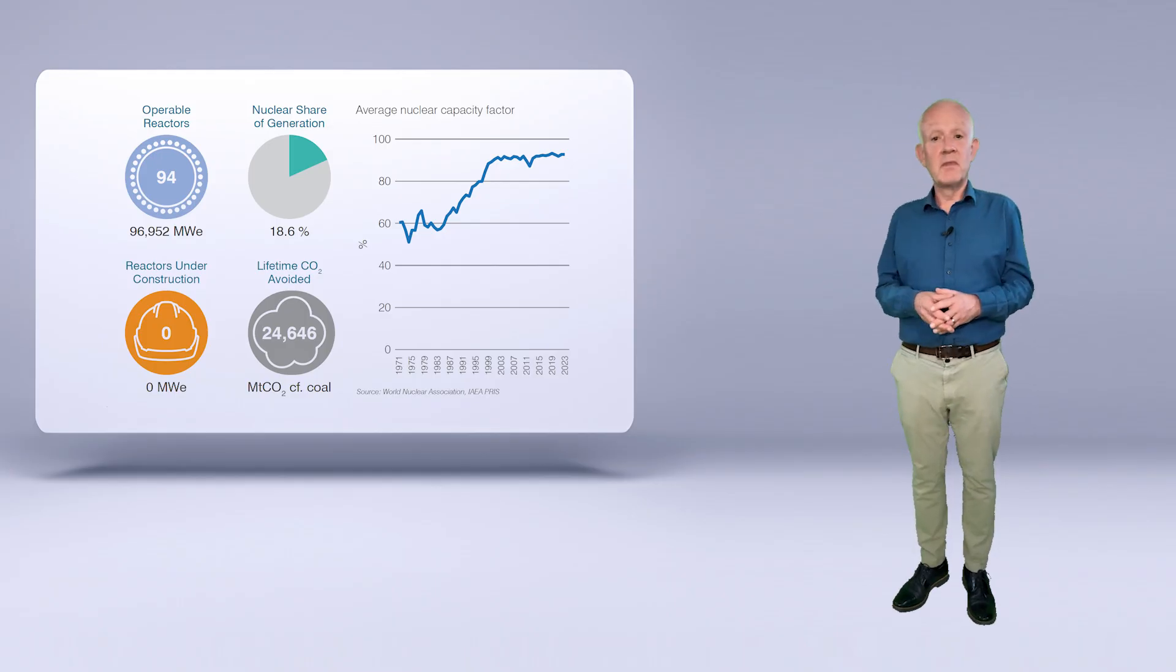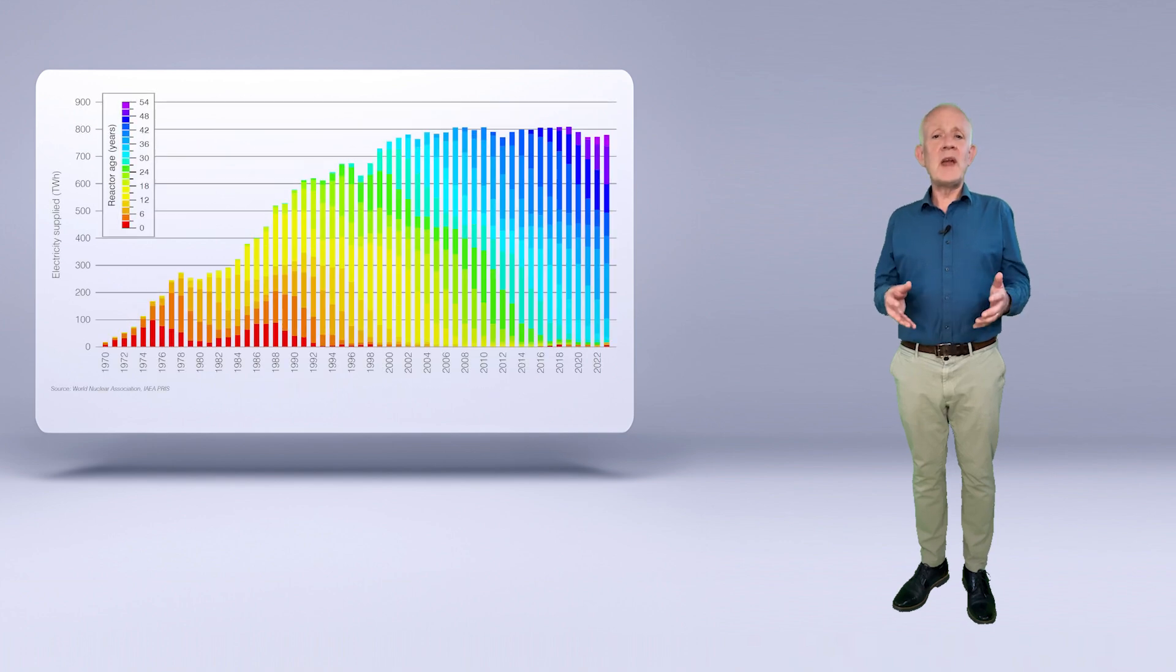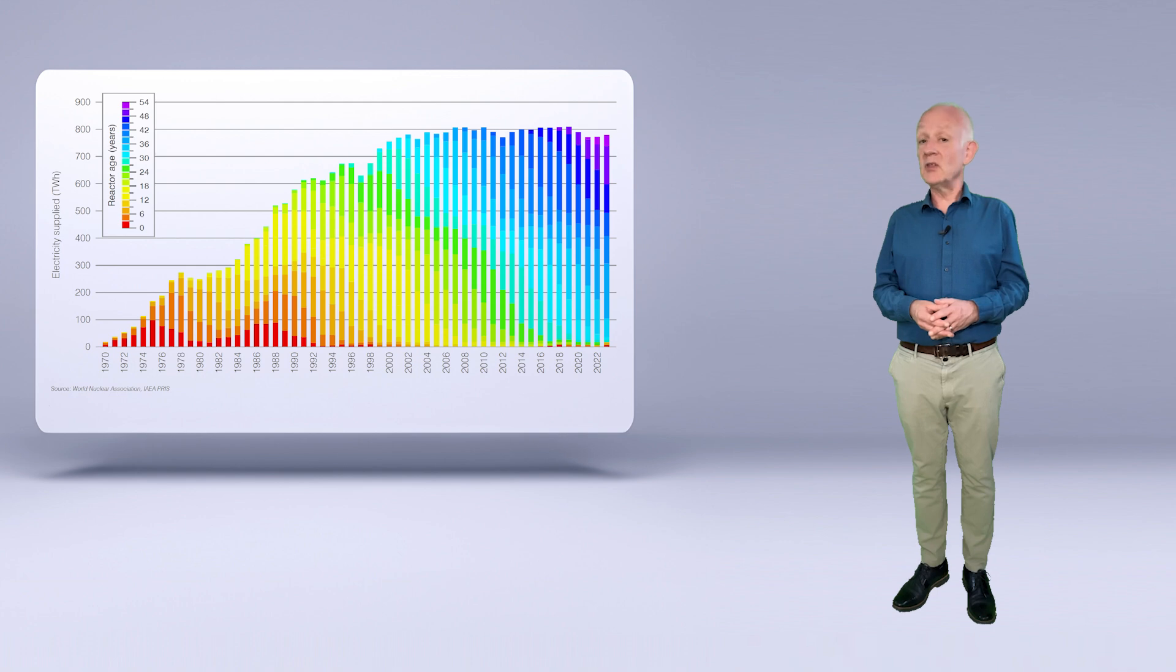As well as global results and case studies, the World Nuclear Performance Report contains overviews of more than 35 countries with operable nuclear reactors or reactors under construction. Here we highlight three. First, the United States. The USA has 94 operable reactors, the highest number of any single country. The average capacity factor in the USA is high, regularly exceeding 90%. While the average age of reactors in the US at 43 years is higher than the global average of 32, plans are already in place to operate reactors for 60 to 80 years, which means there's much generation still to come from these reactors, and this is evidenced by Palisades' proposed return to service. But for nuclear to make a growing contribution in the US, new construction is needed.